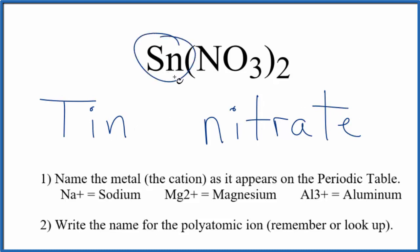But Sn, tin, that's a transition metal, so it can have different ionic charges depending on what it's bonded to. Here, it's bonded to the nitrate ion, two of them, and each nitrate ion has an ionic charge of one minus.